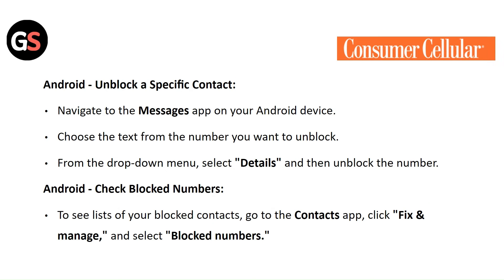For Android, to unblock a specific contact, navigate to the messages app on your Android device. Choose the text from the number you want to unblock. From the drop-down menu, select details and then unblock the number. To check blocked numbers on Android and see the list of your blocked contacts, go to the contacts app, click on fix and manage, and select blocked contacts.